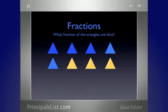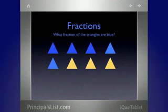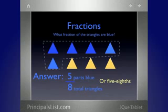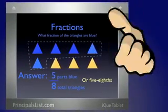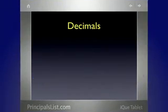All right, students, when Biff gives his answer, I want to see your signals. You can show thumbs up if you agree with Biff, thumb down if you disagree, and thumb to the side if you're not sure. Biff, do you have your answer? I see a total of eight little triangles — four on the top and four down below. And five of those are blue. So the answer is five-eighths. All right, students, do you agree or disagree with Biff? Let's move on to decimals.